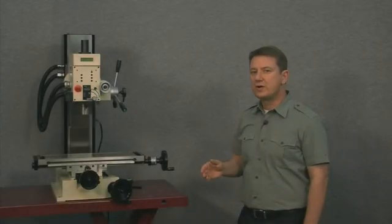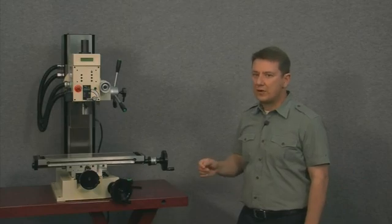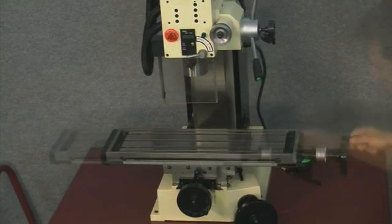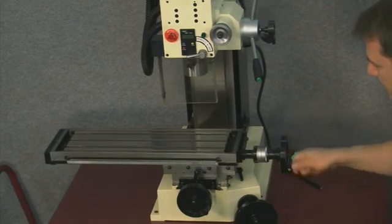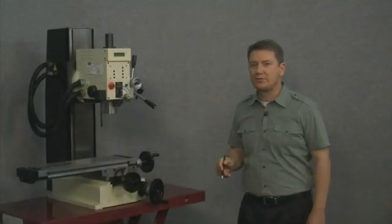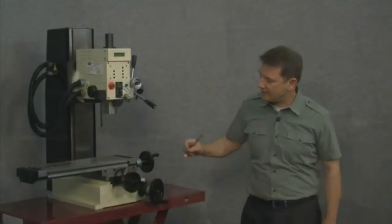We'll start by moving the table to the far left stop. And then we'll make a mark between the table and the saddle.